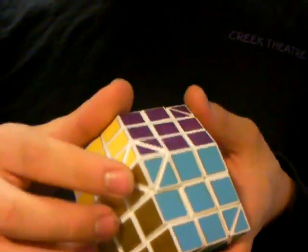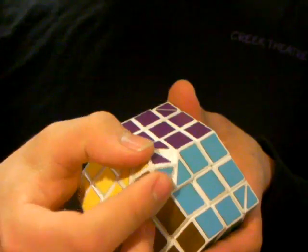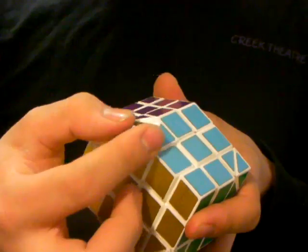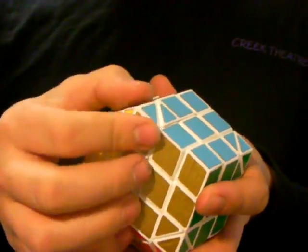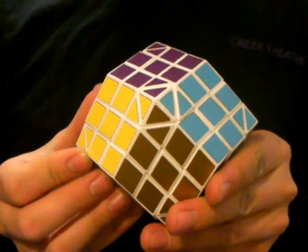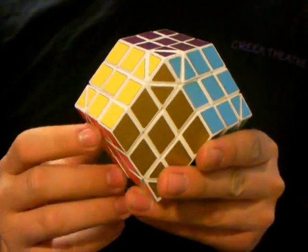And then the one other problem is that these corner pieces here should not be able to do that. They shouldn't be able to turn independently. They're just pretty loose. I am going to try to make a slightly scaled-up version of those corners and see how that works.